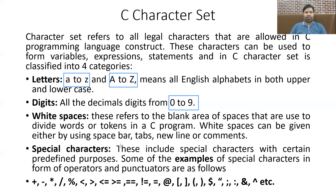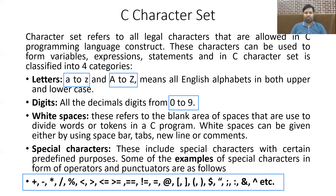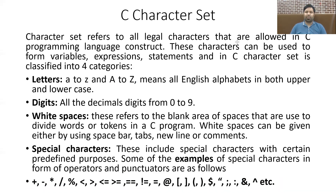Other than alphabets, digits, and white spaces, C allows you to use special characters that have certain predefined meanings. A list of all such symbols is given at the bottom. All these symbols have a predefined meaning, and whenever you use any of these symbols, you must use them according to the predefined format given by C.